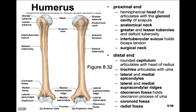Above the capitulum we'll see the lateral epicondyle — 'epi' means above, so it's the bump above the condyle called the capitulum. And the medial epicondyle is above the trochlea, on the medial side of the elbow. The trochlea and capitulum are the slippery surfaces that articulate with the bones of the forearm: the capitulum with the radius and the trochlea with the ulna.